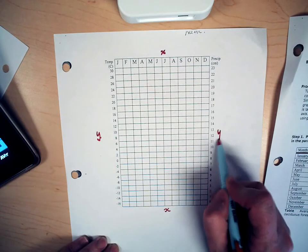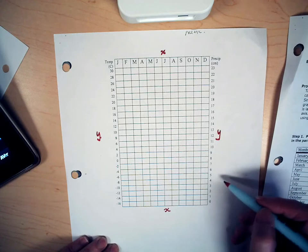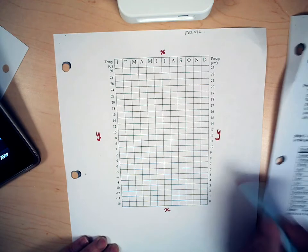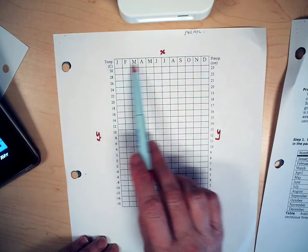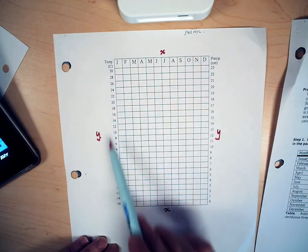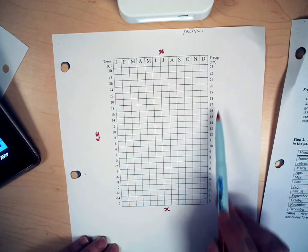But we're also going to use the right-hand side of the paper as an axis. The months are listed along the x-axis. Temperature is listed on one side of the y-axis and precipitation on the other.